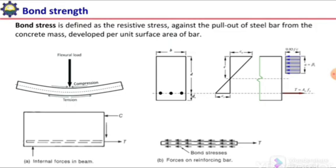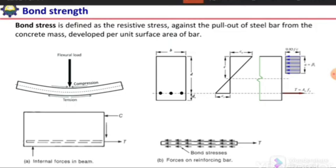To understand the concept of bond stress, we first need to understand the mechanism of flexural resistance in a beam. Consider a simply supported beam subjected to a point load. Under the application of this load, the beam will bend downward, with compression at the top and tension at the bottom.